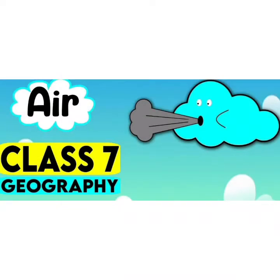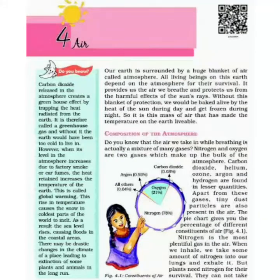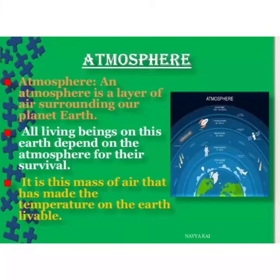Hello, today we're going to study chapter 4 on air. There is a special substance that floats around on earth which we cannot see but we can feel it. It allows all living beings on earth to breathe — that is, air. Or we may call it a huge blanket of air called atmosphere. Now let's study the composition of the atmosphere.